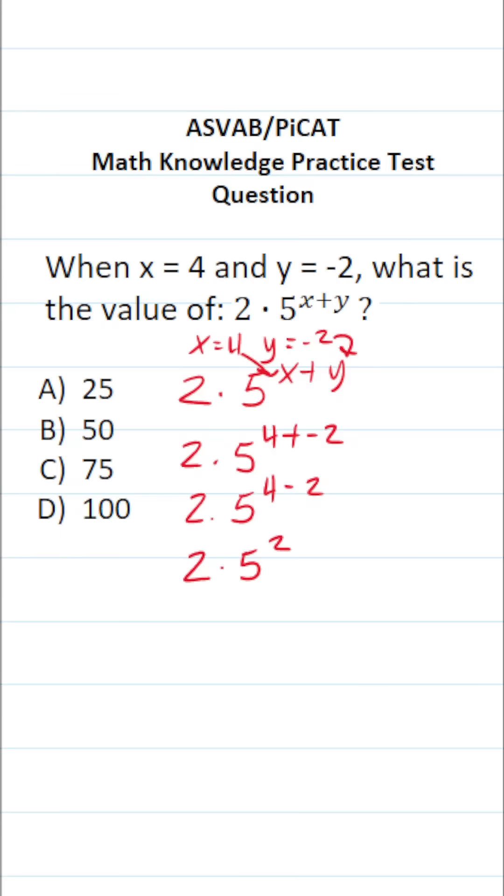So this is 2 times 5 to the second power or 5 squared. 5 squared is the same thing as 5 times 5, which is 25.